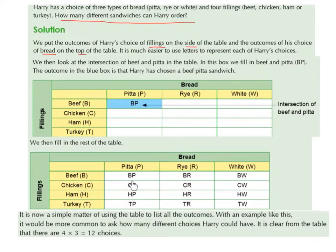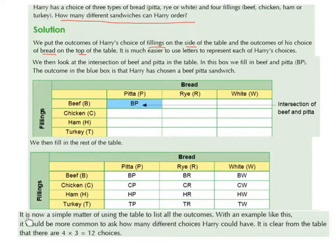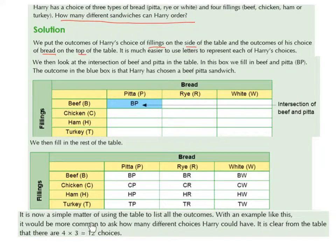So these are all our possible options. It is now a simple matter of using the table to list all the outcomes. With an example like this, it would be more common to ask how many different choices Harry could have. It is clear from the table that there are 4 times 3, which is 12 choices.